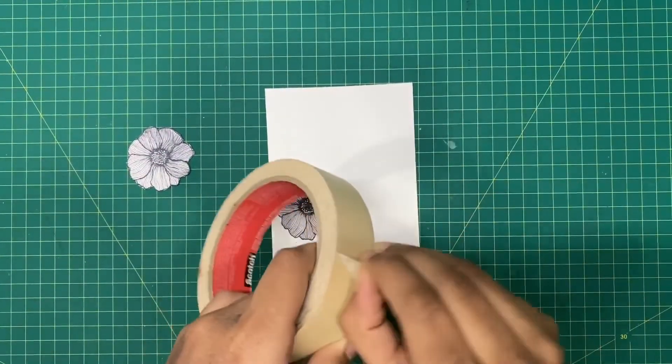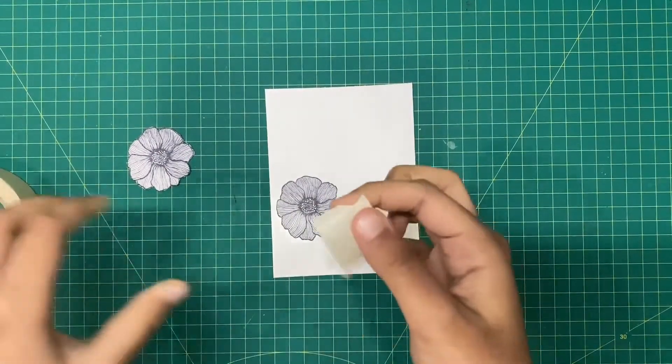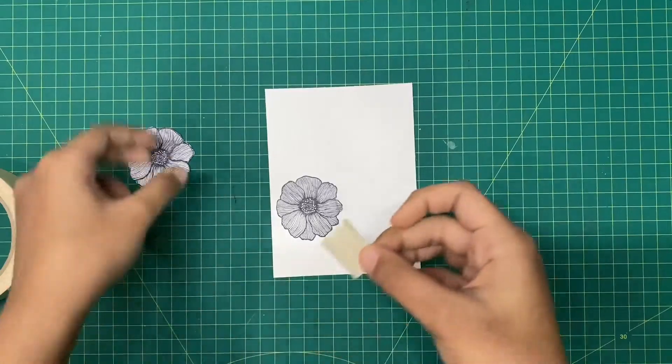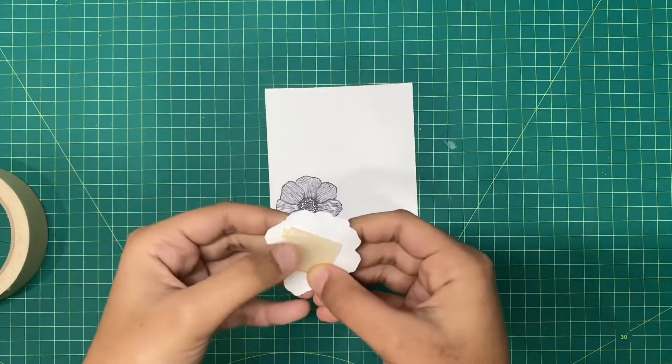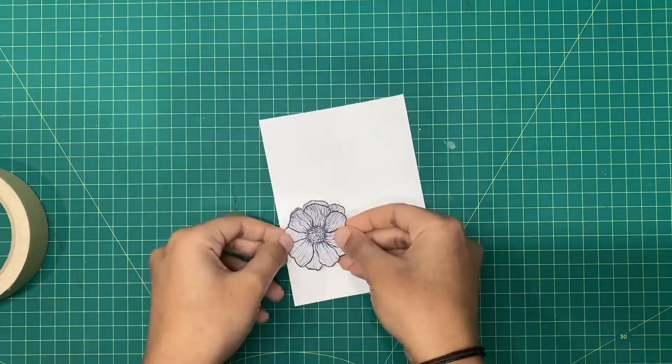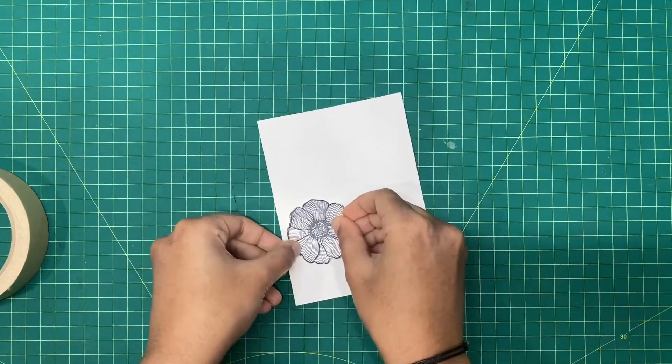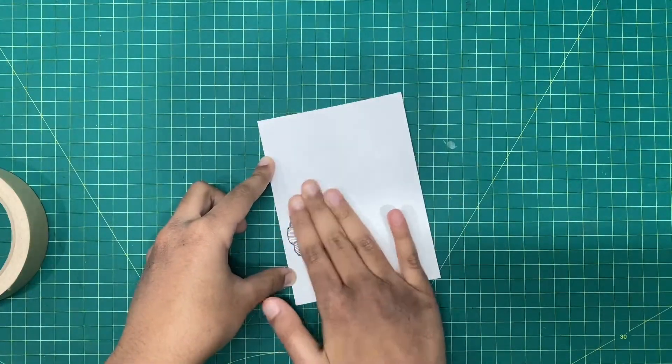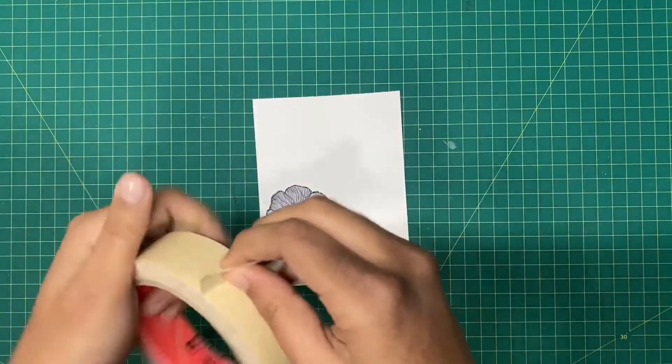I'm going to take a piece of masking tape and roll it up like this. I'm sticking this at the back of the cutout sunflower. After I did that, I'm going to line it up to the sunflower on our mat cardstock and stick it.